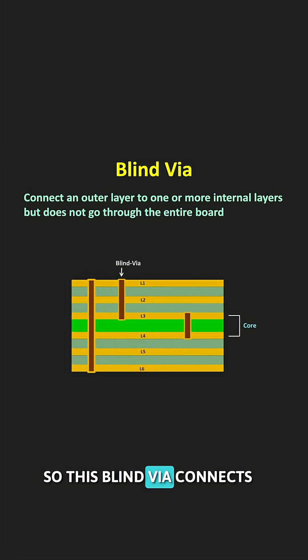Blind Vias connect an outer layer to one or more internal layers but do not go through the entire board. These Vias are perfect for space saving in dense PCB boards.